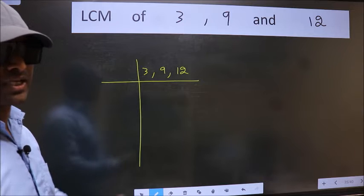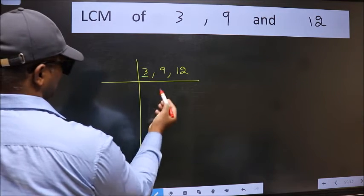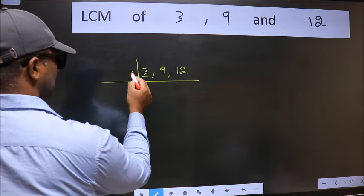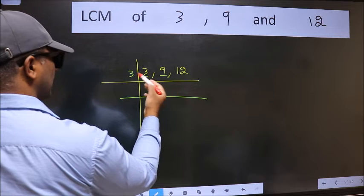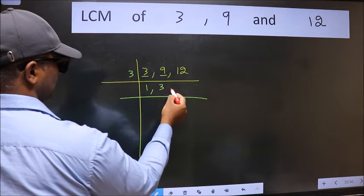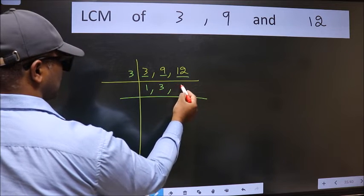Now we should focus on the first number which is 3 here. 3 is a prime number so 3 wants 3. The other number 9, when do we get 9 in 3 table? 3, 3 is 9. The other number 12, when do we get 12 in 3 table? 3, 4 is 12.